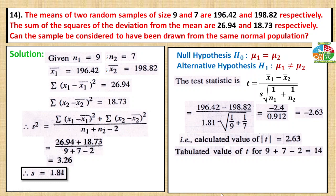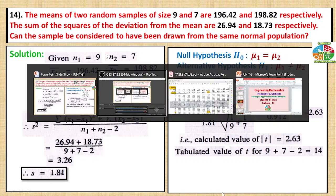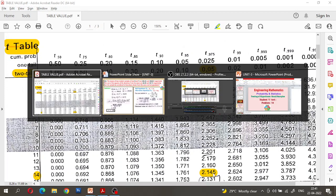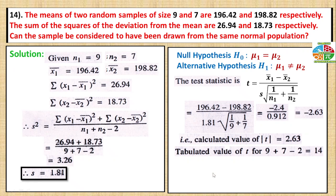For 14 degrees of freedom at 5% level of significance, using the t-table for a two-tailed test at 0.05 significance level with sample size 14, the tabulated value is 2.145. Rounding up, the table value is 2.15.